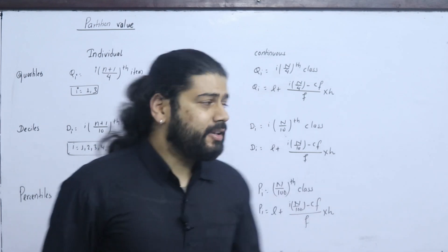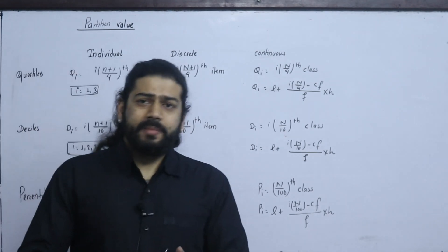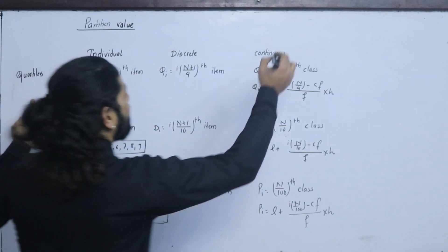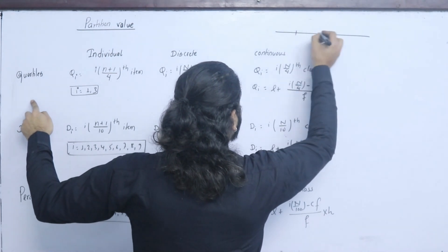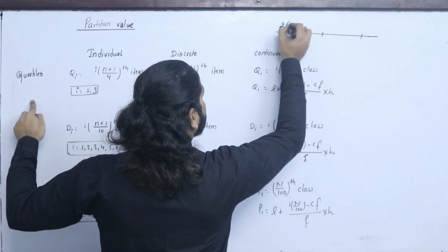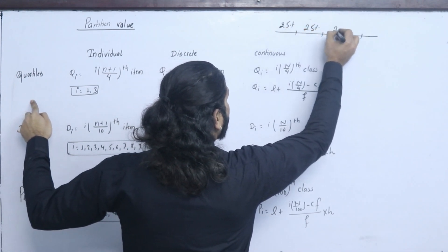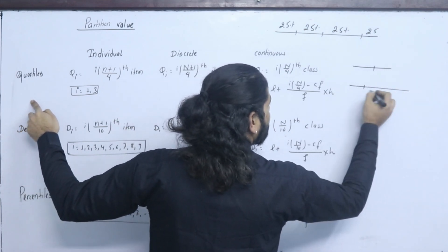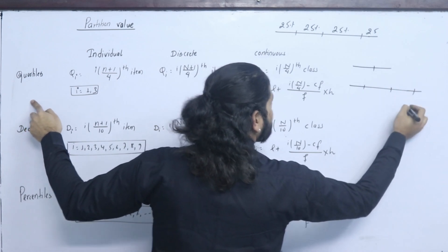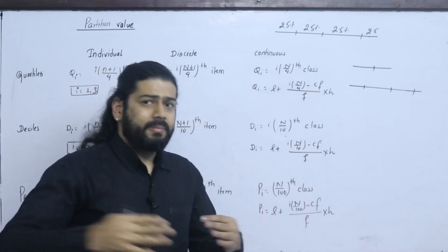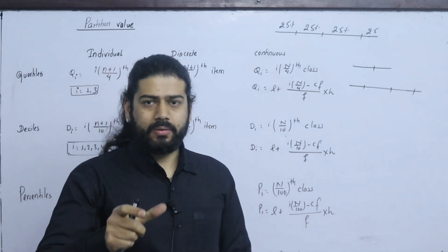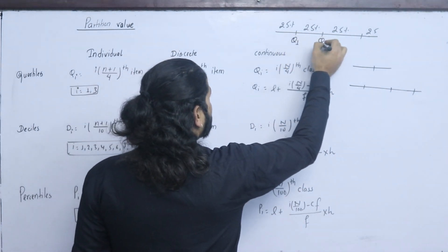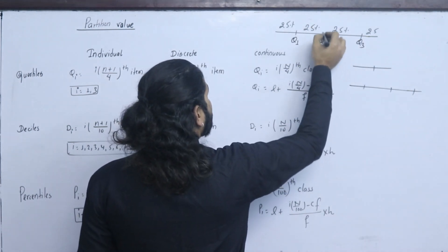What is a partition value? Quartile is called Quartile. In central tendency we have certain values. Quartile divides data into 4 equal parts, each part representing 25%. So the data is divided into 4 parts: 25%, 25%, 25%, 25%.